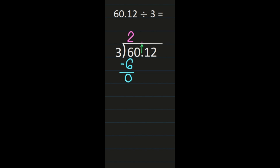Then the next step is to bring down. Remember, it's divide, multiply, subtract, and then bring down. I'm bringing a 0 down, and if I bring a number down I have to start all of those steps again. So I have 0 divided by 3 — 0 divided by 3 is 0. That 0 goes above that 0 in my quotient. 0 times 3 is 0. I subtract, I get 0. So I've divided, I've multiplied, I've subtracted, and now I'm at the step of bringing down.